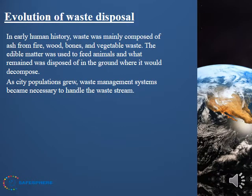Now we're going to talk about the evolution of waste disposal. In early human history, waste was mainly composed of ash from fire, wood, bones, and vegetable waste. Edible matter was used to feed animals, and what remained was disposed of in the ground where it would decompose. As city populations grew, waste management systems became necessary to handle the waste stream.